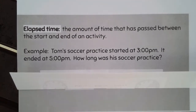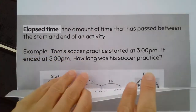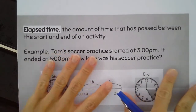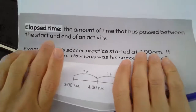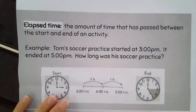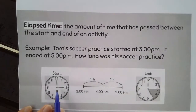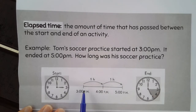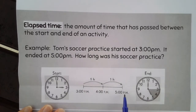So, let's talk about how we can figure out how long Tom's soccer practice is, if it started at 3 o'clock and ended at 5 o'clock. In this example, you're going to see that there's a number line drawn and we're going to be using number lines to help us figure out elapsed time. You can see his soccer practice started at 3 o'clock, so 3 o'clock is the first number on the number line. It ended at 5 o'clock, so 5 o'clock is the last number on the number line.